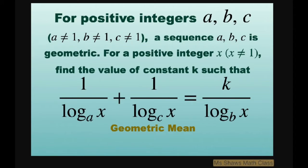For a positive integer x, and x can't be 1 either, we're going to find the value of the constant k, such that 1 divided by log base a of x plus 1 divided by log base c of x equals k divided by log base b of x.